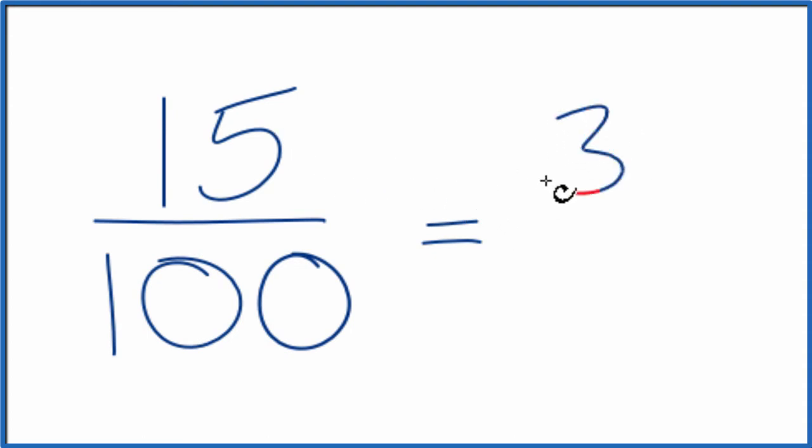15 divided by 5, that's 3. And then 100 divided by 5 is 20. 5 times 20, that gives us 100. So we end up with a fraction 3 over 20, and that's the simplified fraction for 15 over 100.